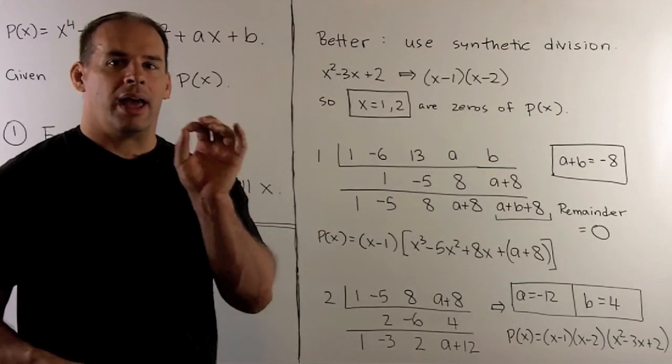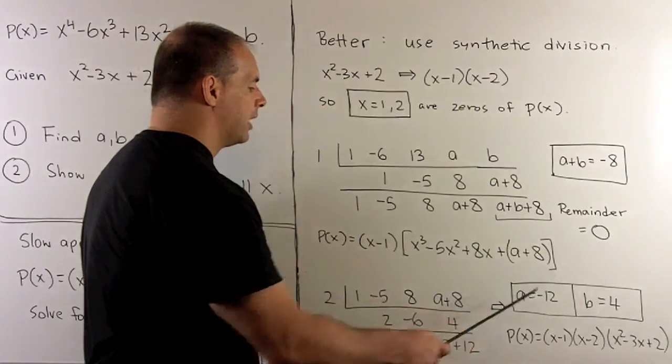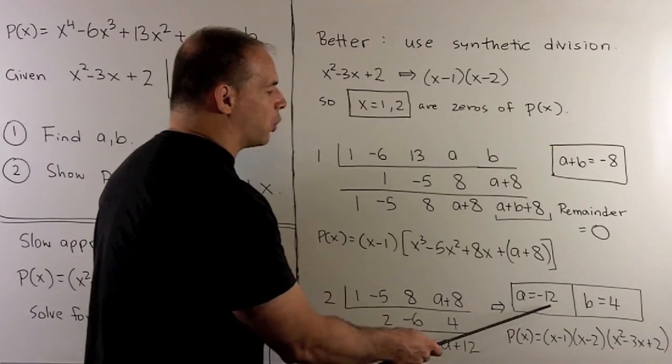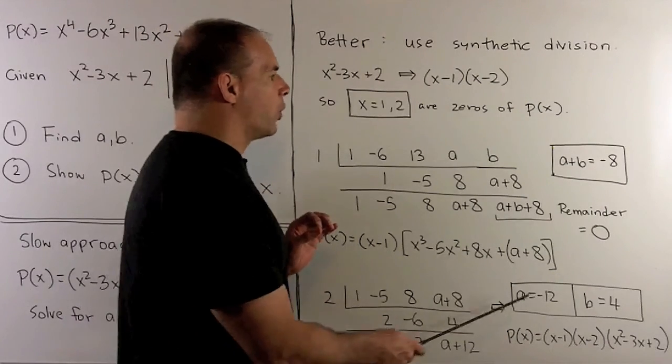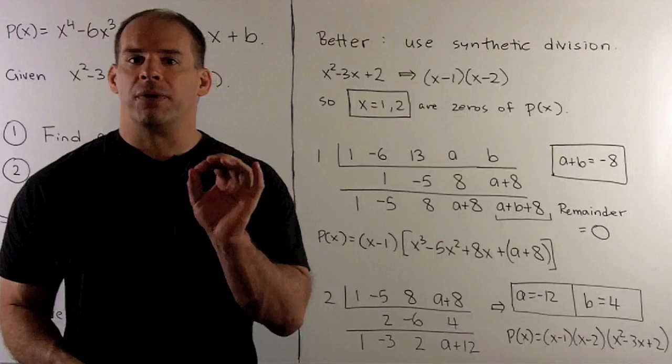Then, because we know X minus 2 divides evenly into this cubic, the remainder has to be equal to 0. So that says A is equal to minus 12. Going to our equation here, we have B equal to 4. That answers our first question.